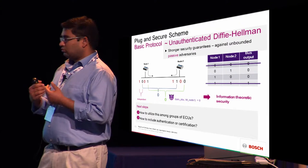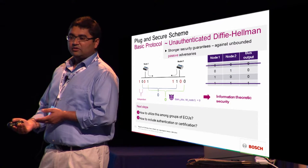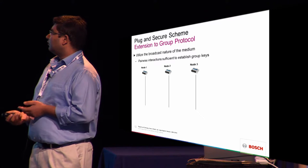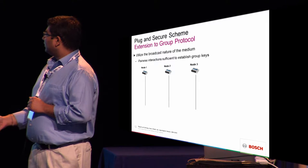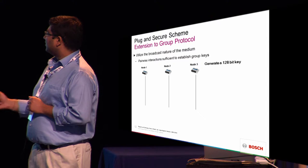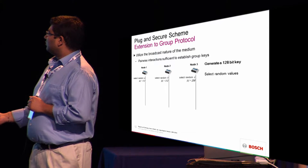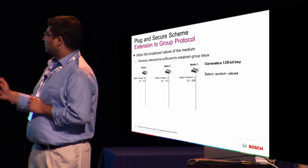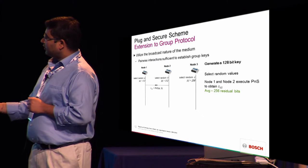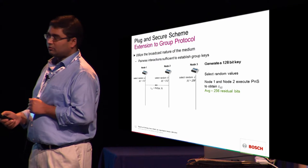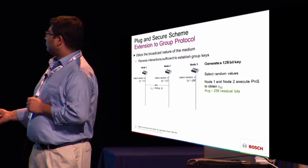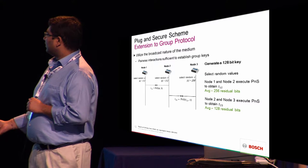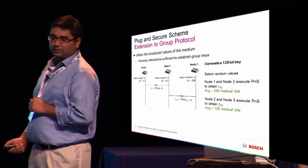The question then becomes: how do we extend this to a group of ECUs, and how do you add authentication? The extension to the group protocol is actually very straightforward. To generate a 128-bit key with nodes A, B, and C: node A selects 512 bits, B selects 512 bits, C selects 256 bits. Nodes 1 and 2 do this plug-in secure two-party scheme — on average they're left with 256 residual secret bits. Then node 2 and node 3 do the same and they're left with an average of 128 bits.